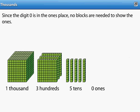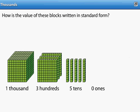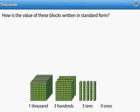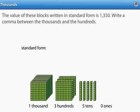How is the value of these blocks written in standard form? The value of these blocks written in standard form is 1,350. Write a comma between the thousands and the hundreds.